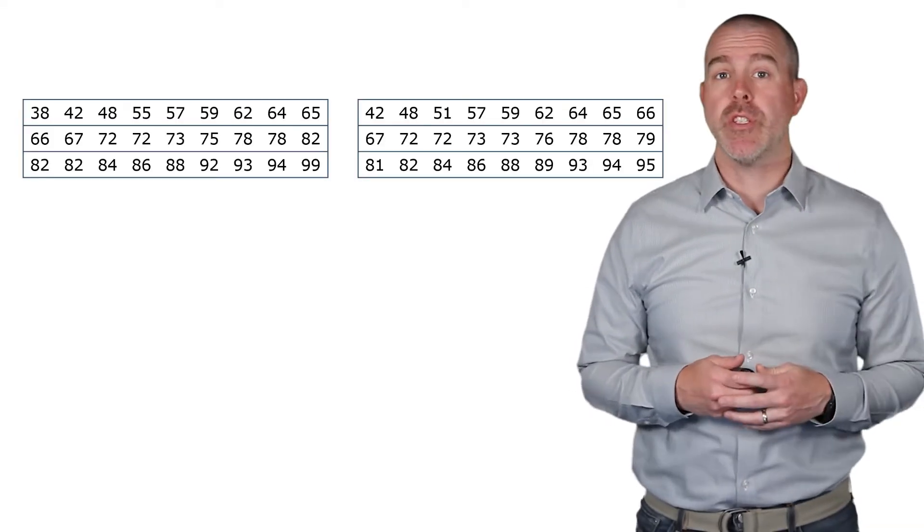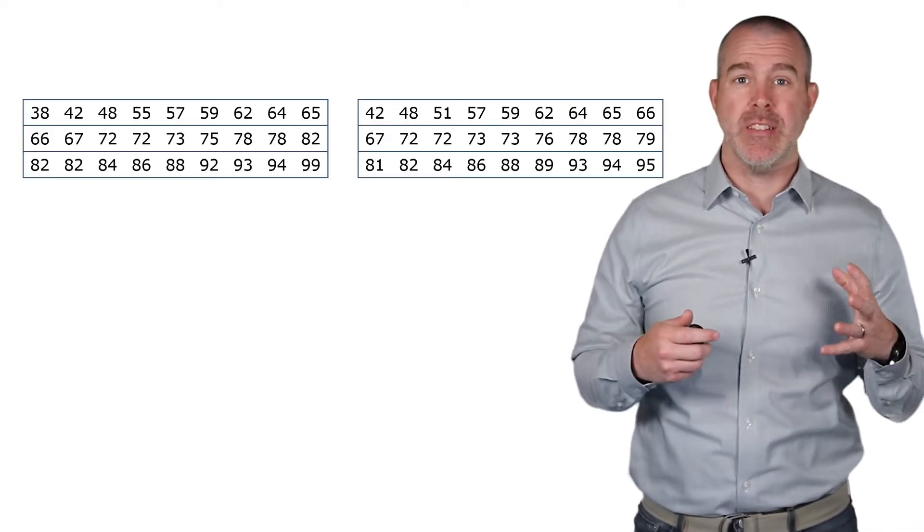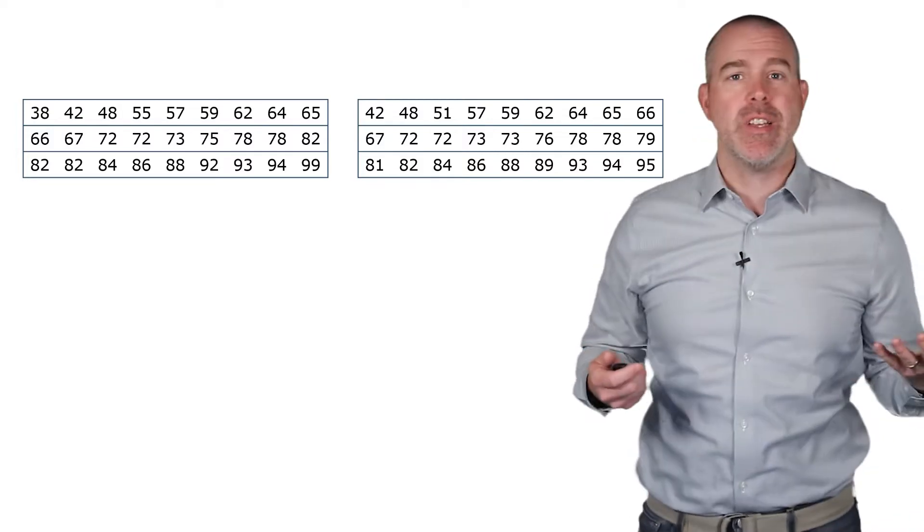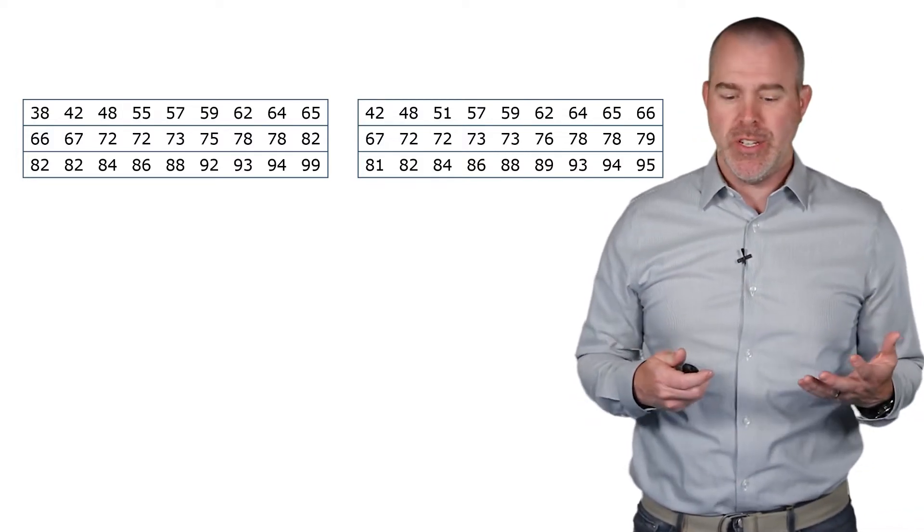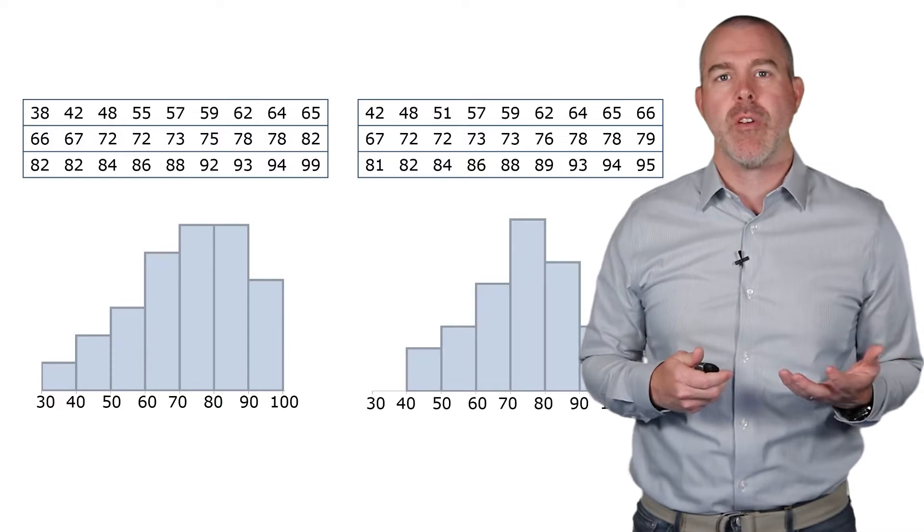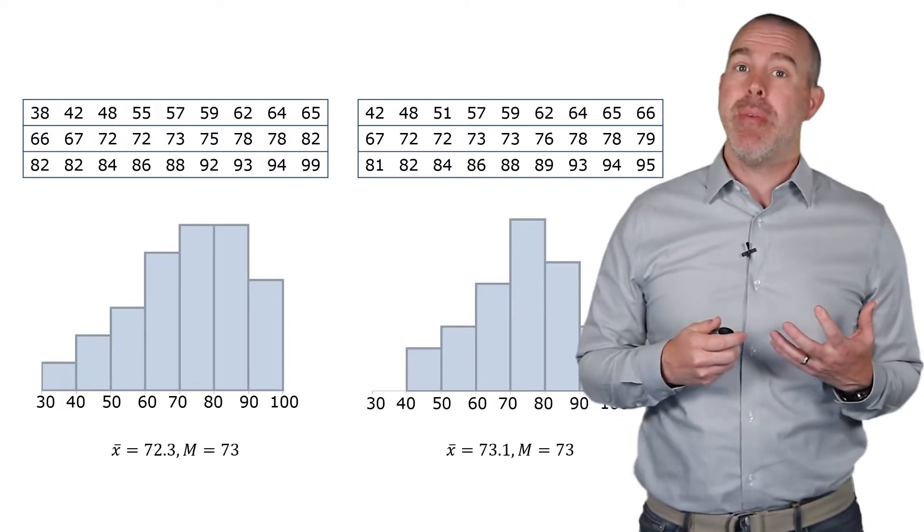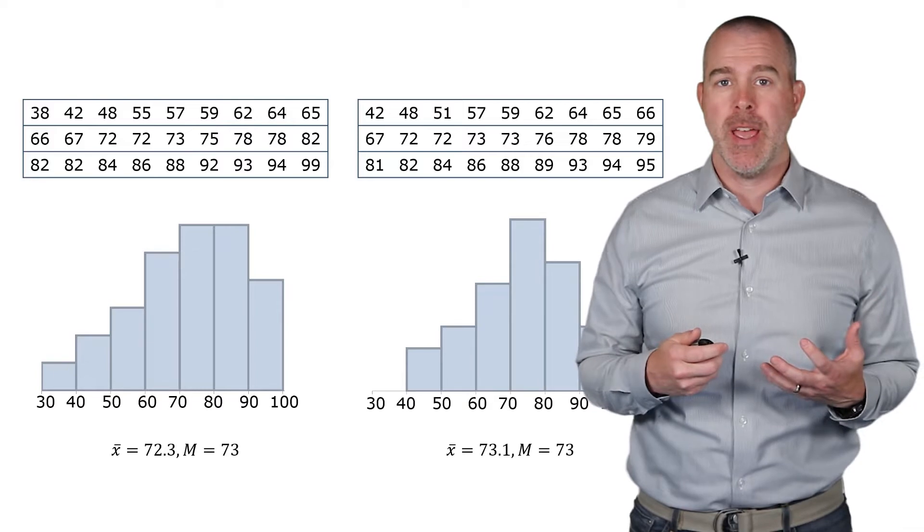We're going to learn two measures of spread. To illustrate these and develop the concepts, let's start with some fictitious exam scores. Got two sets here. The first set, here's a histogram, here's the second one. We can see that the means and medians are pretty similar, about the same.